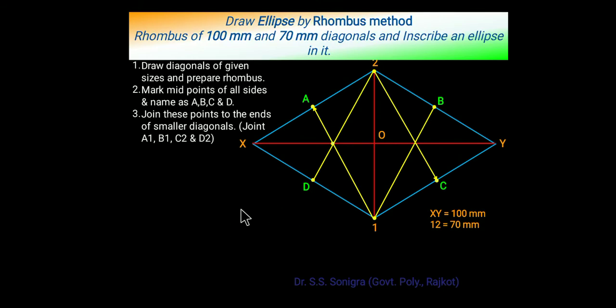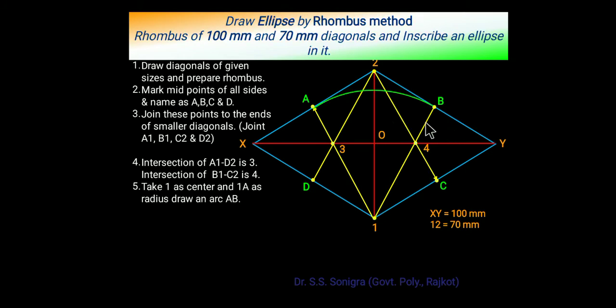Intersection of 1A and 2D is point number 3, and intersection of 2C and B1 is point number 4.